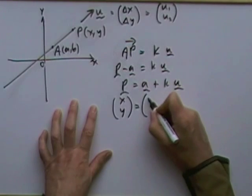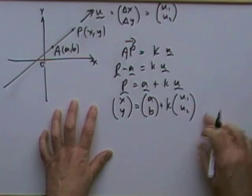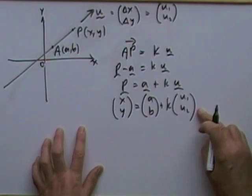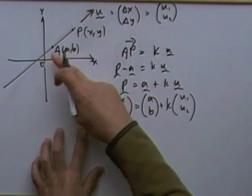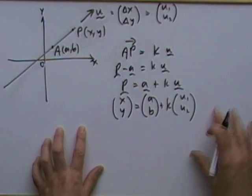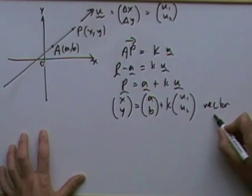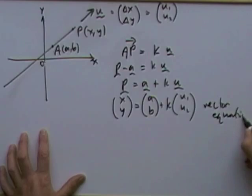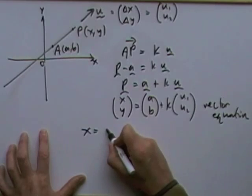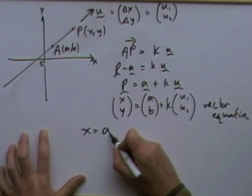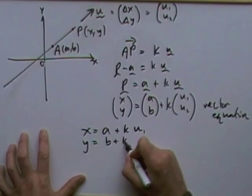Written out, the general point (x, y) equals the point (a, b) plus k lots of (u1, u2) — that's the vector equation. The handy thing about this vector equation is that you can split it into two separate equations by taking the x and y components: x equals a plus ku1, and y equals b plus ku2. These form the parametric equations of the line.